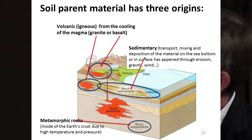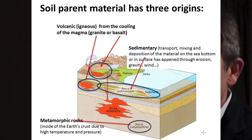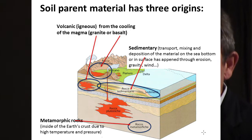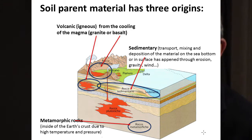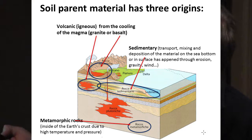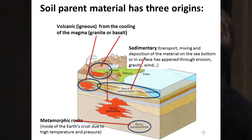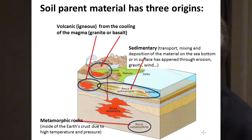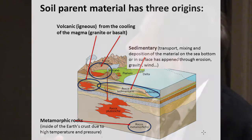The first is a volcanic origin from the cooling of magma. If the cooling occurs outside or inside the earth, we have granite or basalt. Then we have sedimentary rocks and soil, where transport, mixing and deposition of material on the sea bottom or on the surface happened through erosion, gravity, wind and so on. The last one is metamorphic rocks inside the earth's crust, due to high temperature and pressure.